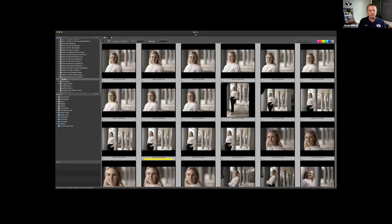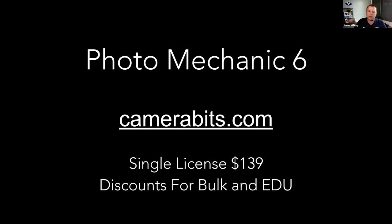I can't recommend Photo Mechanic highly enough. Most of us use Photo Mechanic, but maybe some out there don't — some crazy people who even use Bridge. It's time to stop and join the rest of us; Photo Mechanic is where it's at. It's the quickest way to manage and organize your photos. Photo Mechanic 6 at camerabits.com — a single license is $139, with discounts for bulk and edu licenses. Worth every penny. It's the primary thing we use to organize and rename our photos.